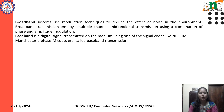Broadband systems use modulation techniques to reduce the effect of noise in the environment. Broadband transmission employs multiple channel unidirectional transmission using a combination of phase and amplitude modulation.